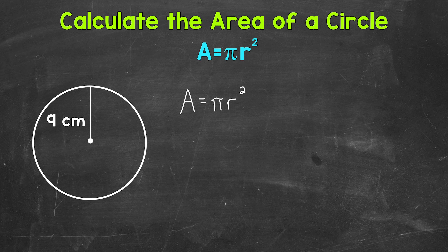Then I'm going to plug in the radius. So area equals pi times the radius, which is 9 cm squared. After that, let's do 9 squared, which means 9 times 9, not 9 times 2. That's a common mistake.